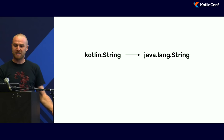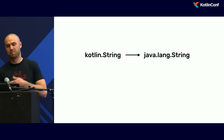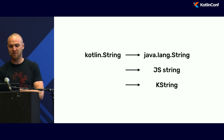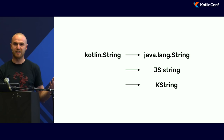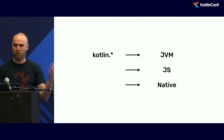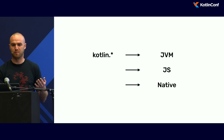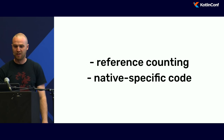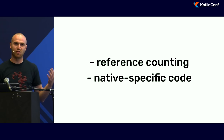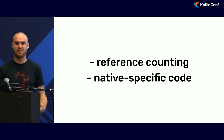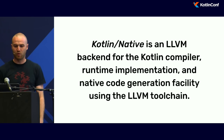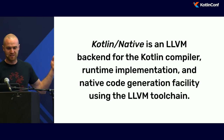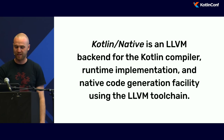What is runtime implementation? In Kotlin you can have kotlin.String, which just becomes java.lang.String; similarly for JavaScript. For Kotlin Native it's KString. And there are more classes, like standard platform types — that's what it means to have a runtime for Kotlin Native. It also has reference counting as a form of GC, and native-specific code. So hopefully now this definition is a bit more understandable.